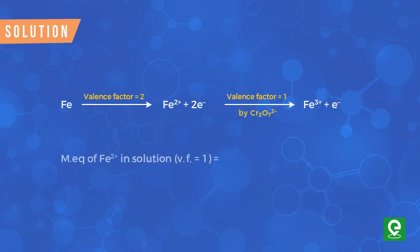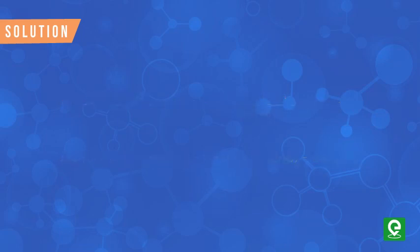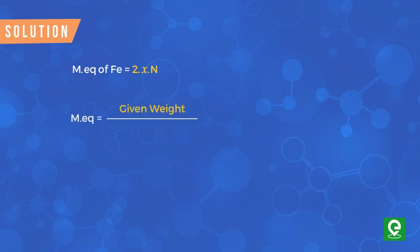Using equivalent concepts, the number of milliequivalents of ferrous ions equals the number of milliequivalents of potassium dichromate, which can be calculated by multiplying volume by normality. Therefore, milliequivalents of Fe, which has a valence factor of 2, equals 2 × X × N. We also know that milliequivalents = (given weight / equivalent weight) × 1000.